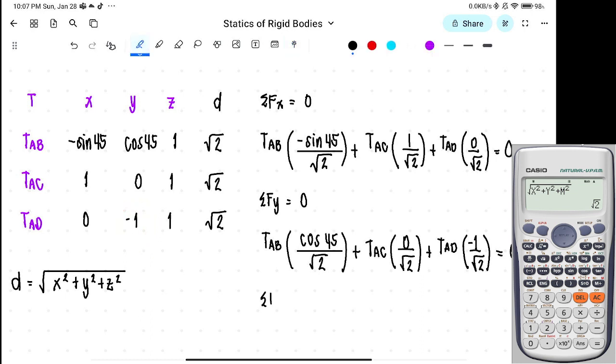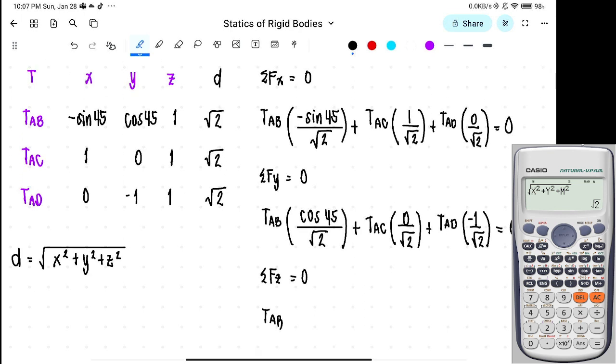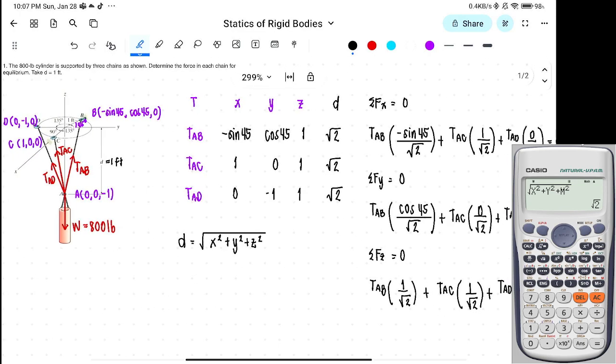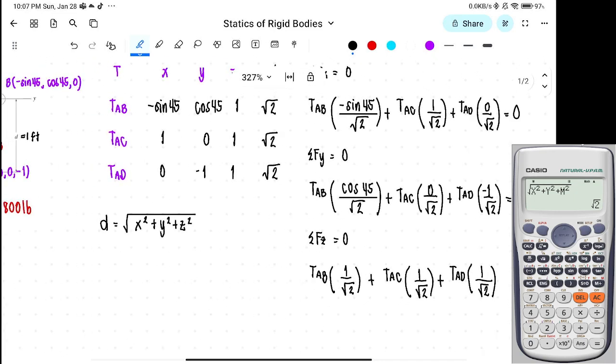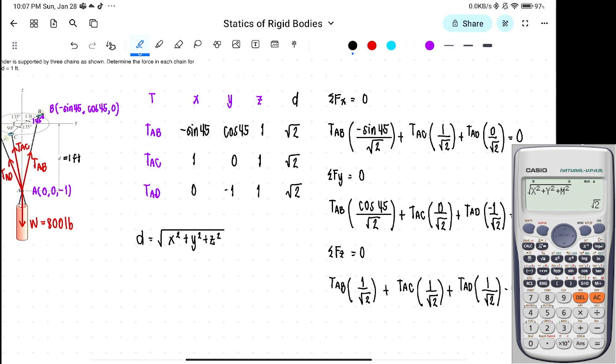Summation of forces along Z equals 0. TAB times 1 over square root of 2, plus TAC times 1 over square root of 2, plus TAD times 1 over square root of 2, minus 800 equals 0. That's our working equation. We have 3 equations, 3 unknowns.